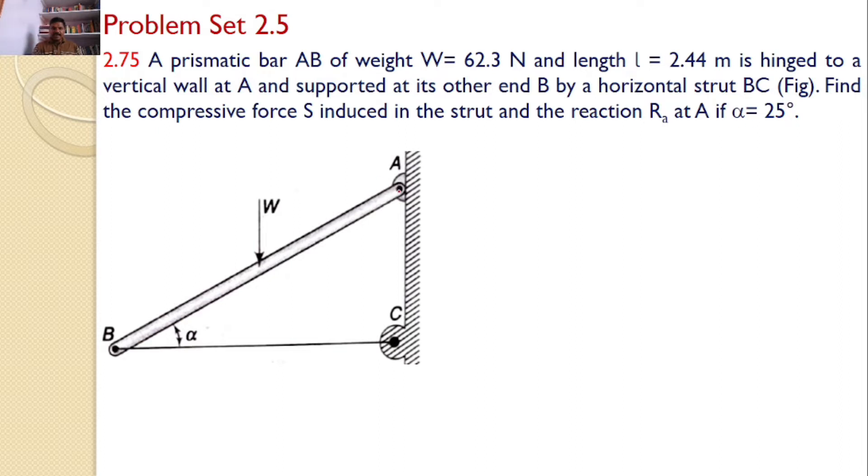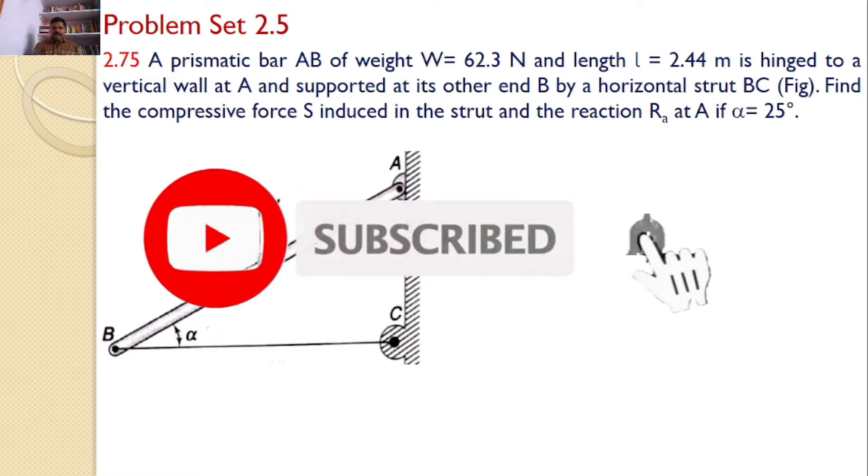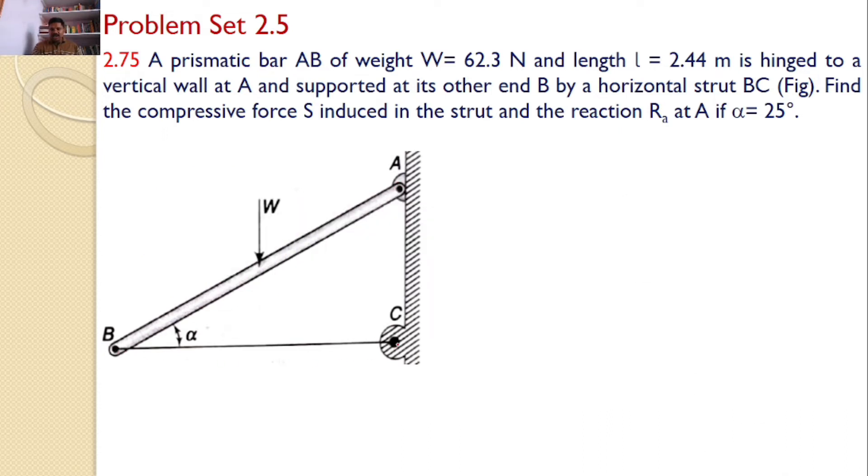That means there is a prismatic bar having weight W and length L supported at A by hinge and it is also connected with a string. Our interest is to find the force in the strut BC.